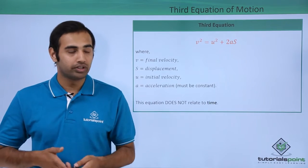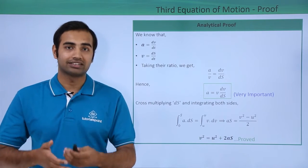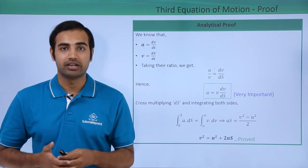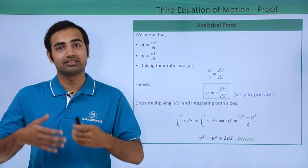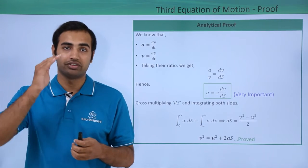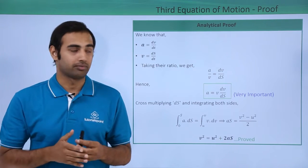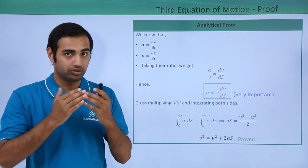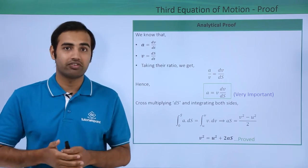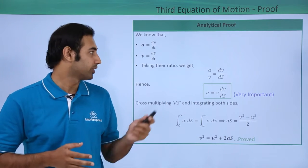Now let us try to prove it. So, over here we know that acceleration can simply be written as dv/dt, rate of change of velocity with respect to time and velocity can be written as ds/dt or the rate of change of displacement with respect to time. Now you must remember our goal in this third equation while proving it is to eliminate the factor of time, that is the most important aspect.